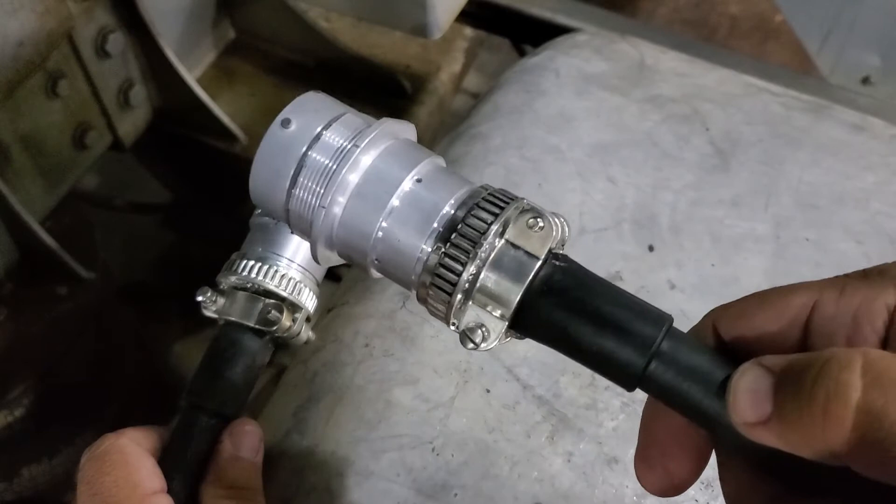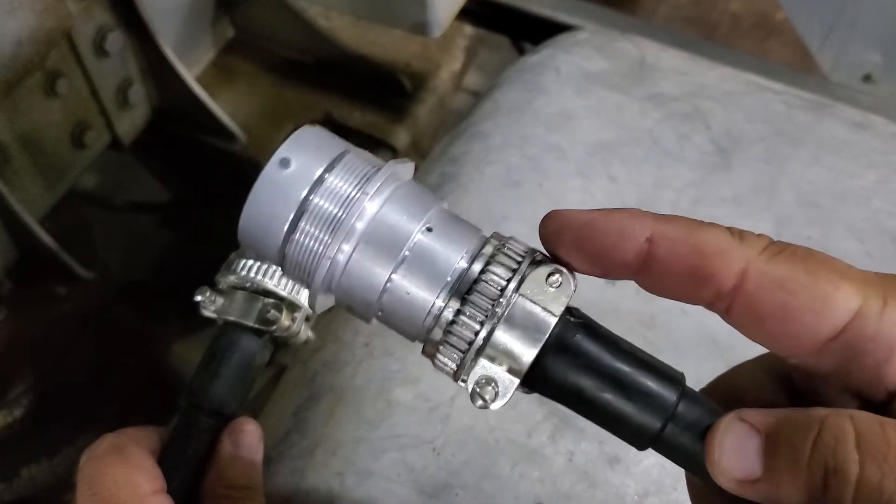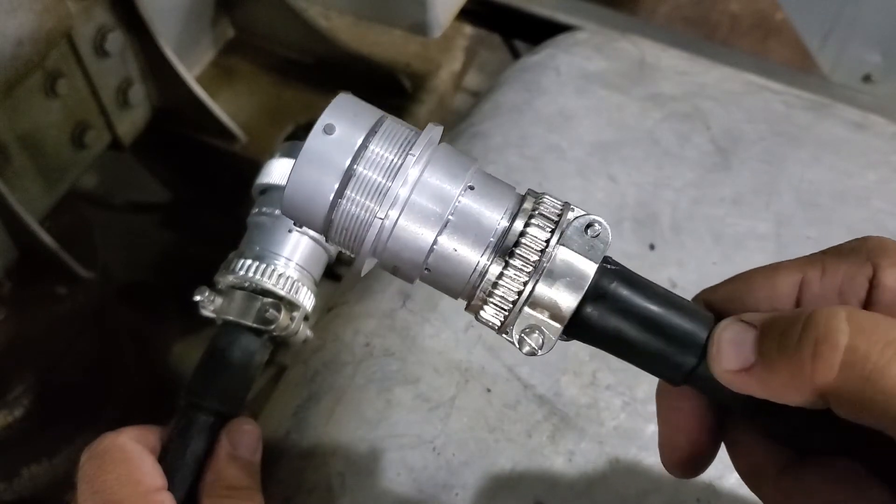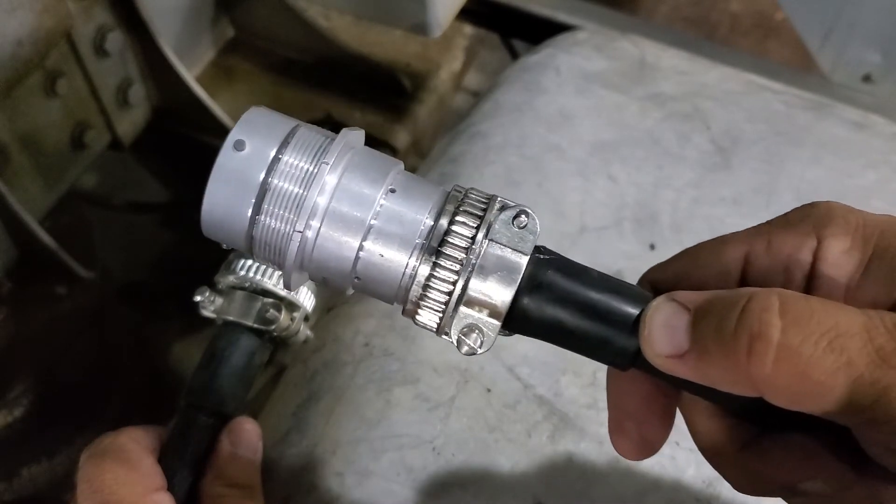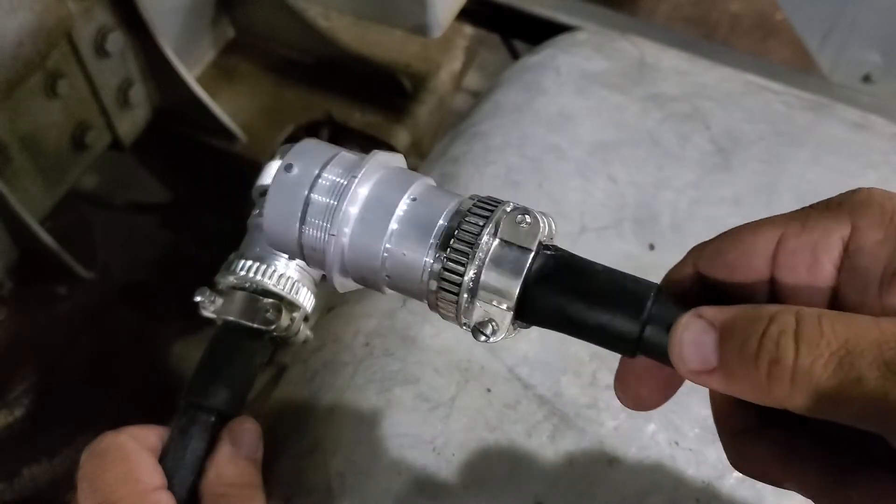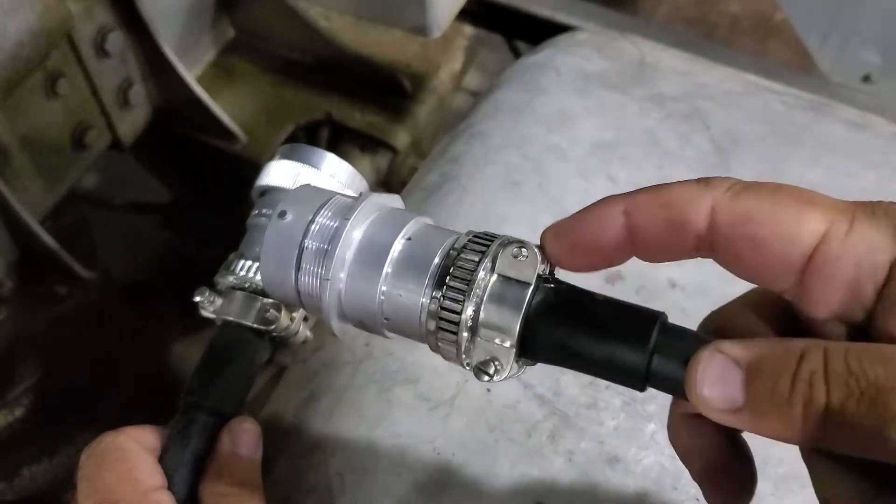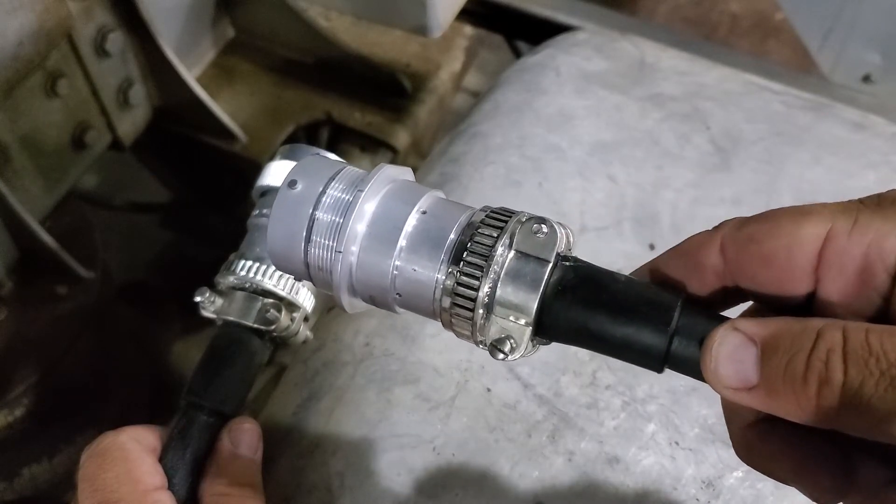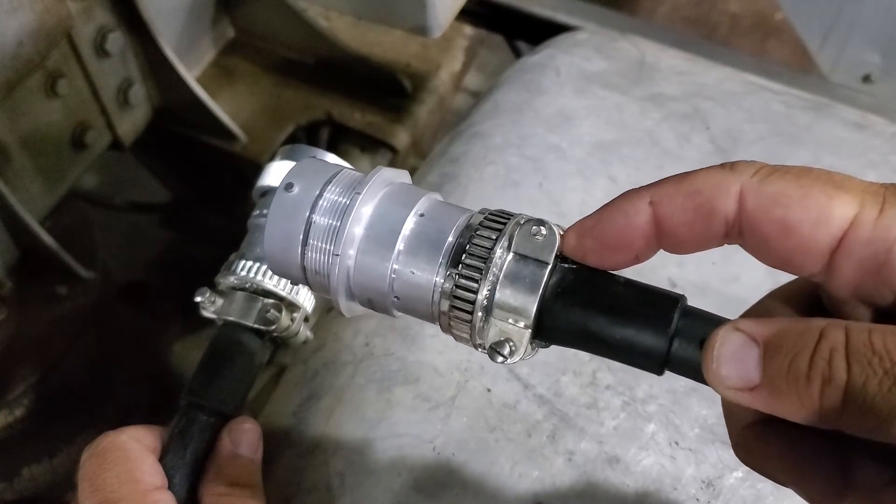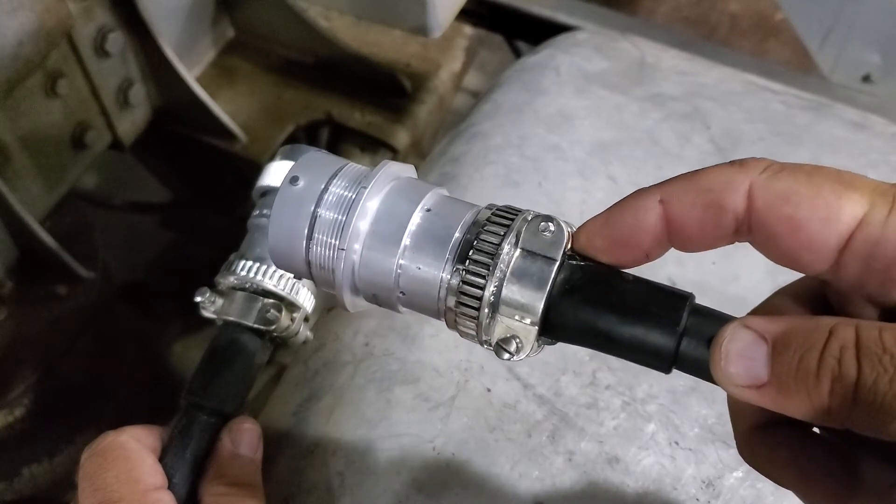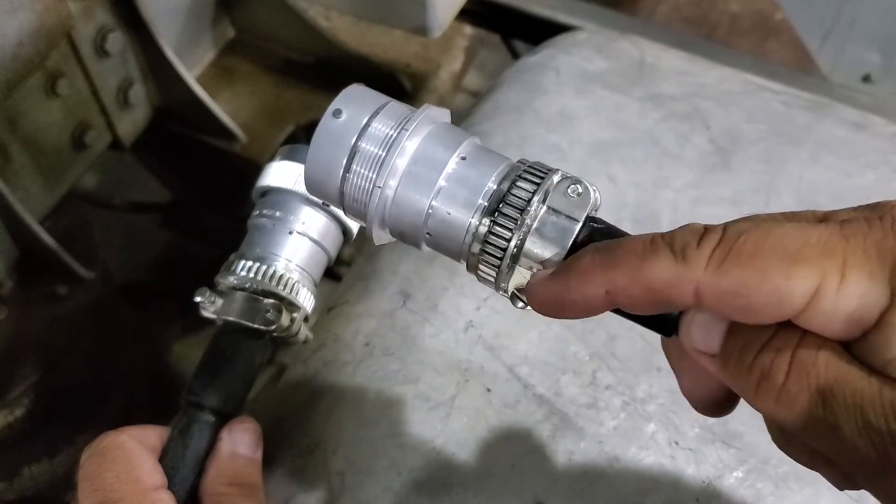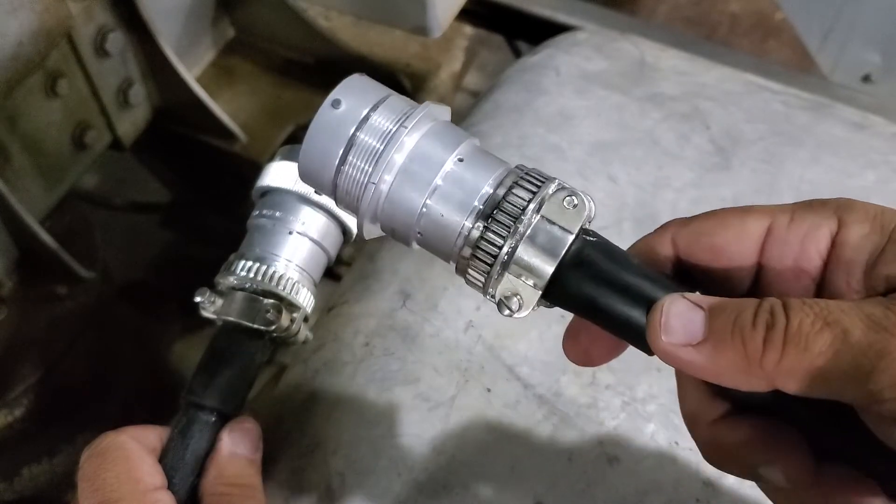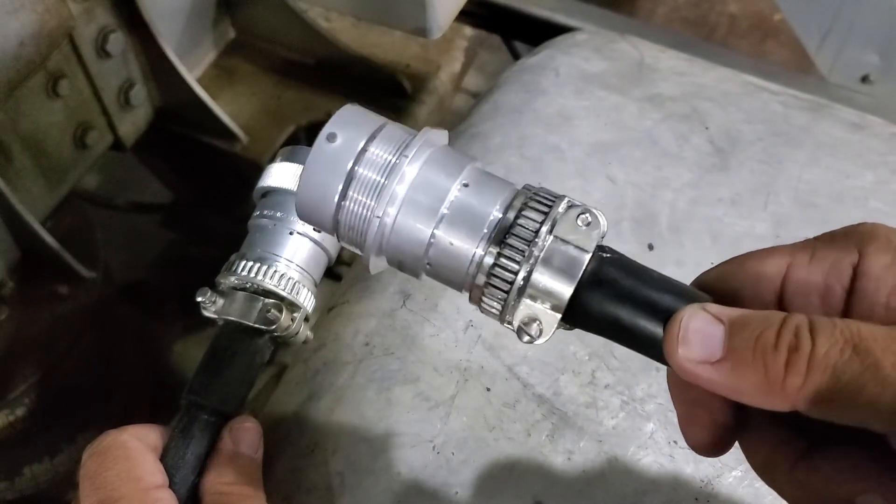So Deutsch does a good job of providing things like these boots and locking collars here to keep both the connection secure and free of moisture and dirt and whatnot. But because of the environment that we're in here, there's a lot of moisture, there's a lot of dirt, oil, hydraulic fluid, just a variety of things. So I like to add a little bit of RTV silicone sealant on the back side of this just to ensure that we don't have anything get inside the connector.